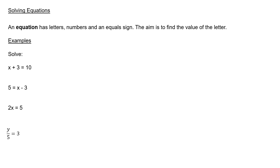An equation has letters, numbers, and an equal sign. The aim is to find the value of the letter, which we also call a variable. In these examples, we need to solve the equations, which means we need to get the letter on its own.